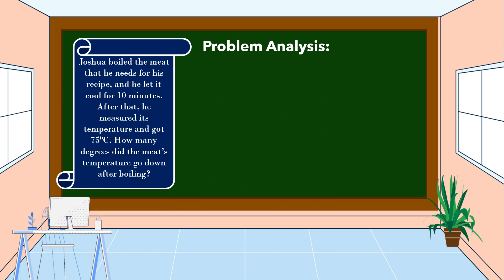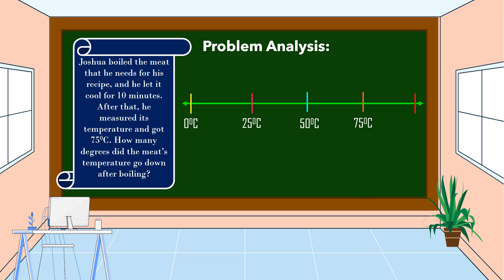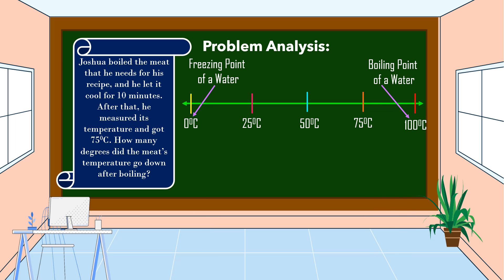Let's analyze. We can use a number line to help us analyze this problem. The scaling of this number line is by 25 degrees Celsius. We have 0, 25, 50, 75, and 100 degrees Celsius. As we all know, 0 degrees Celsius is the freezing point of water and 100 degrees Celsius is the boiling point of water.